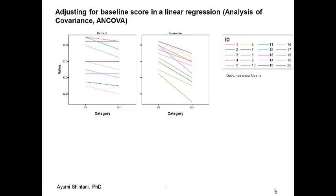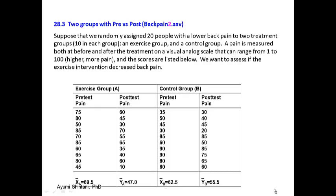The typical analysis conducted for a randomized study is to first assess baseline balance. We take the mean of baseline pain score in the control group and in the exercise group. The mean is 69.5 for the exercise group and 62.5 for the control group. We either eyeball-check or compute a p-value — though I don't recommend reporting just the p-value. It looks like randomization worked, so there is no meaningful difference in baseline pain score.